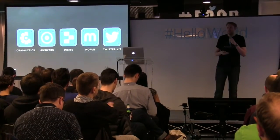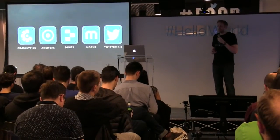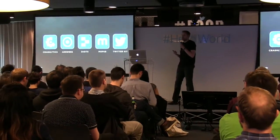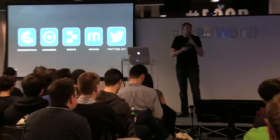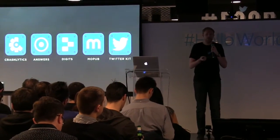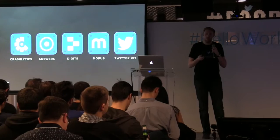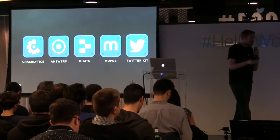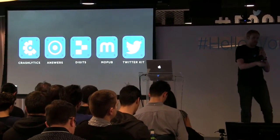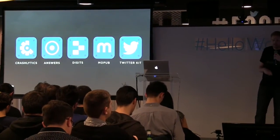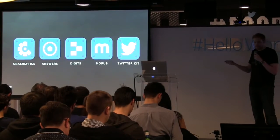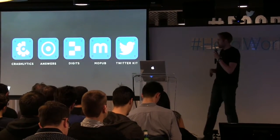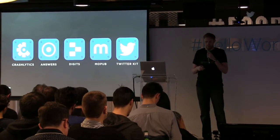Fabric today is made up of these kits — pockets of functionality that are available a la carte, so you can pick and choose the ones that are right for your app or your business. You can combine them in different ways. These are the five kits that Twitter produces today.